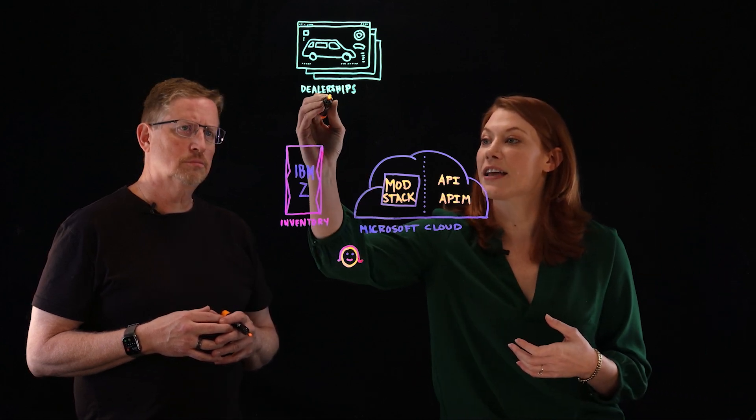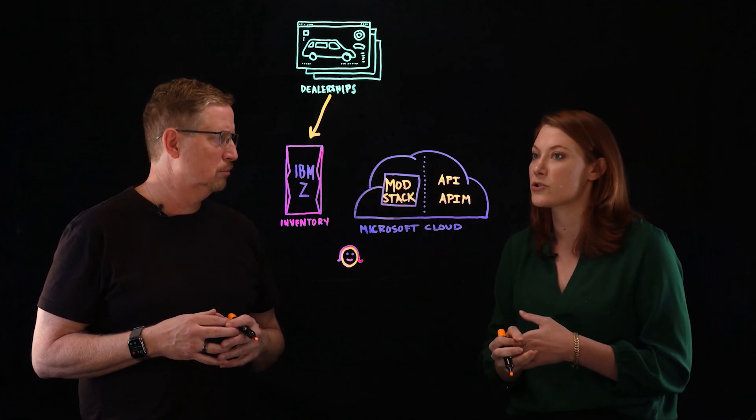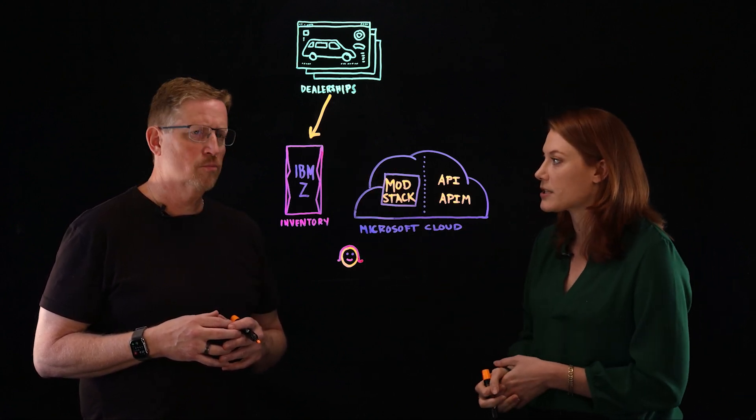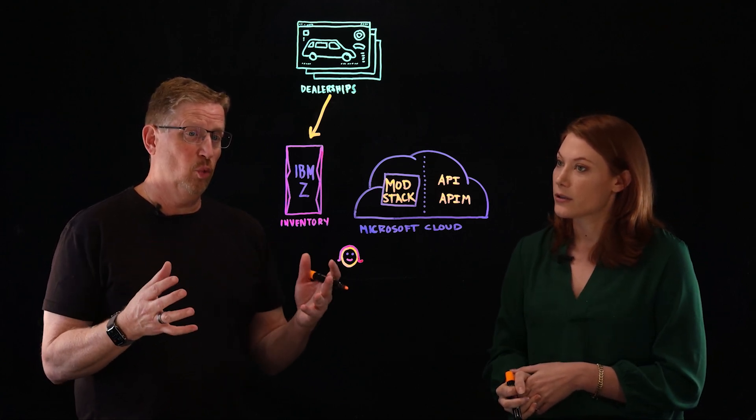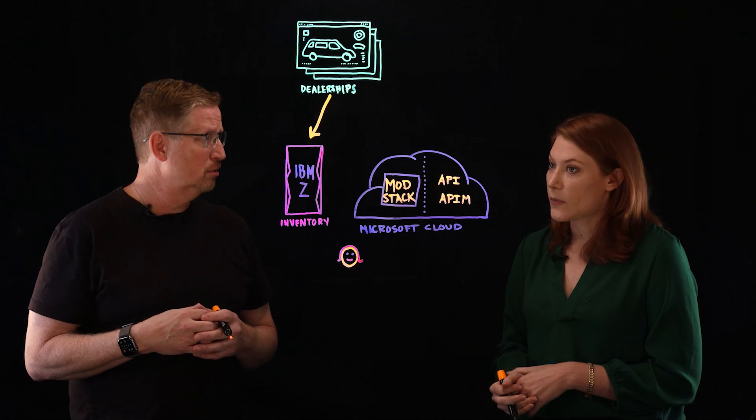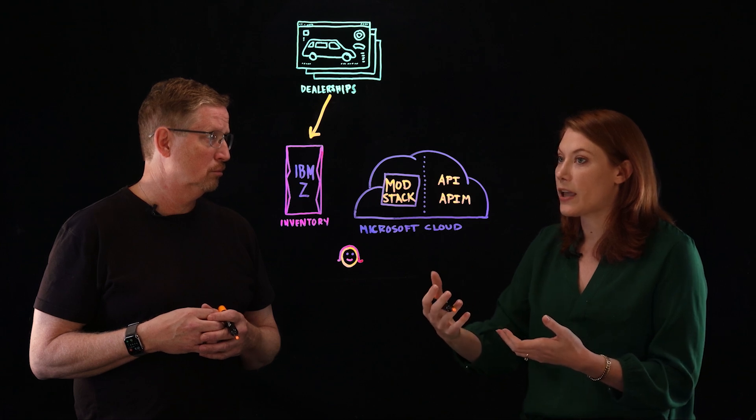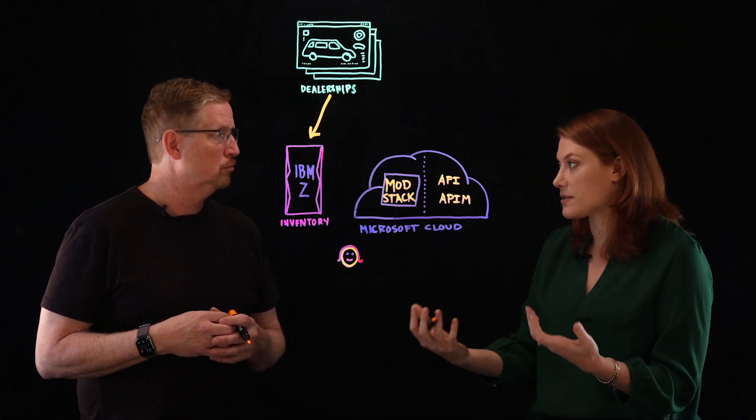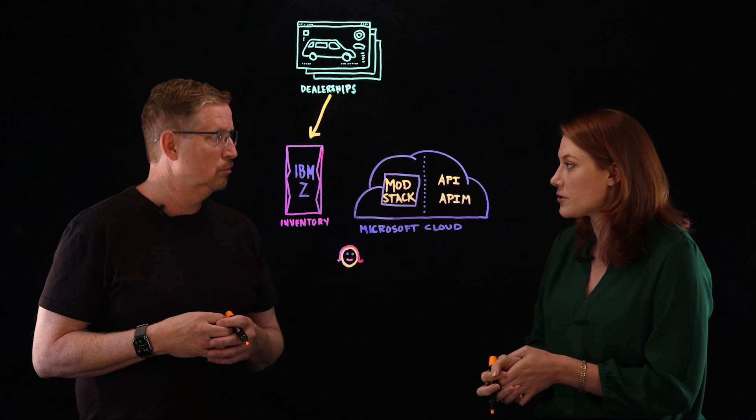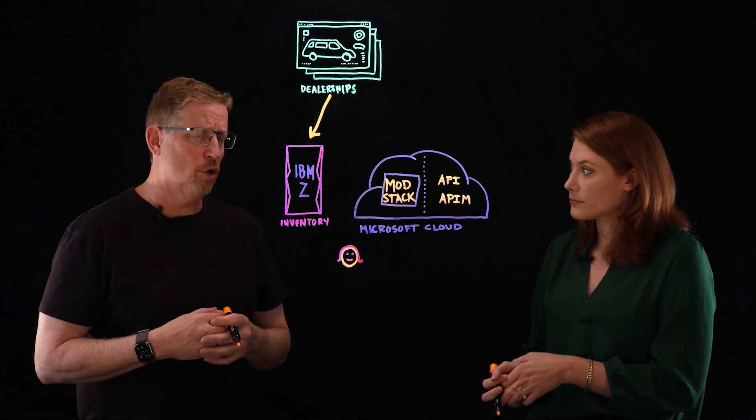So those dealerships are actually hitting the IBM Z looking for parts as they come in because there's a shortage and they're really hammering the mainframe to get that inventory. So the IBM Z is really overworked in terms of consumption. It's really delivering a bunch of non-update transactions. Yeah, and so there's potentially a need for additional capacity, but to solve a short-term issue because it's ideally not a long-term issue with supply chain. So how do we help this customer solve the problem?